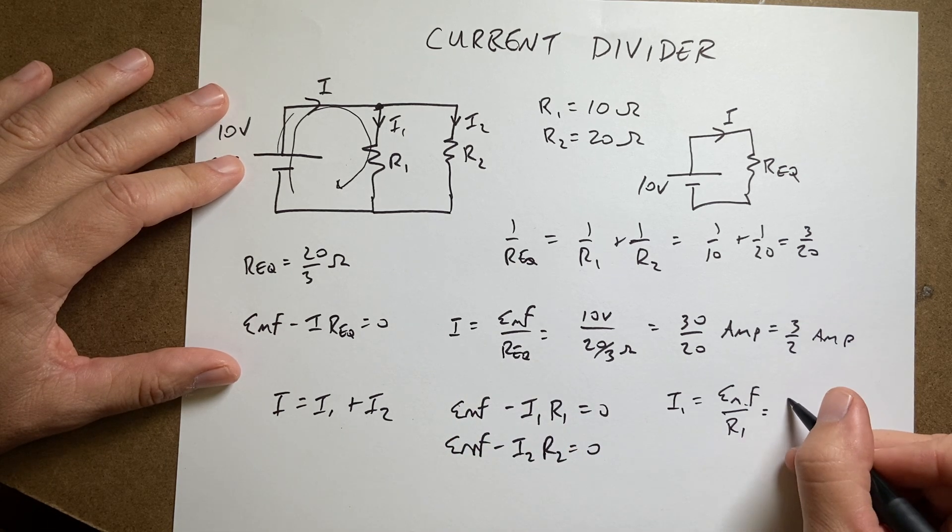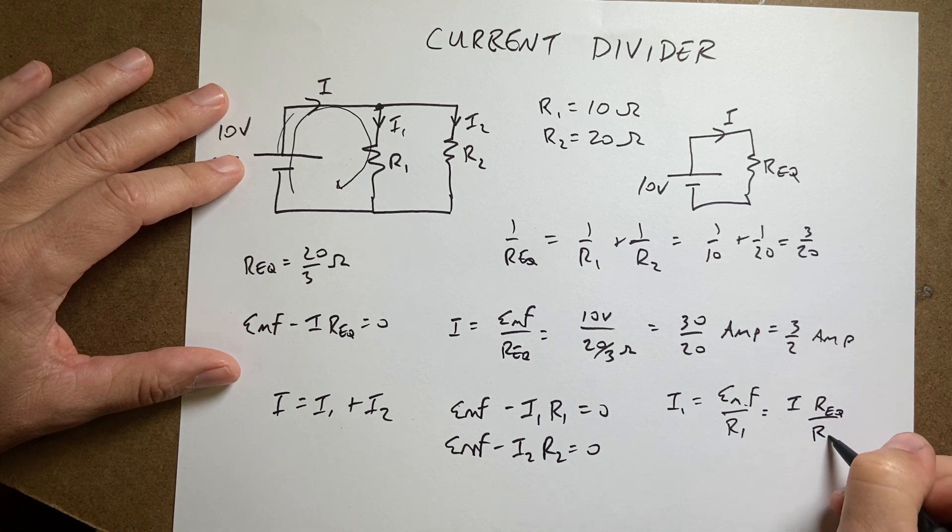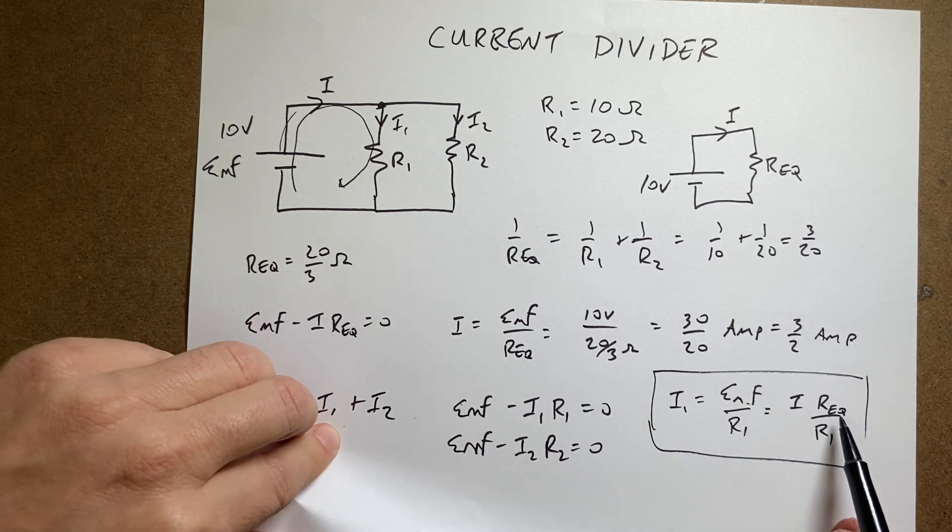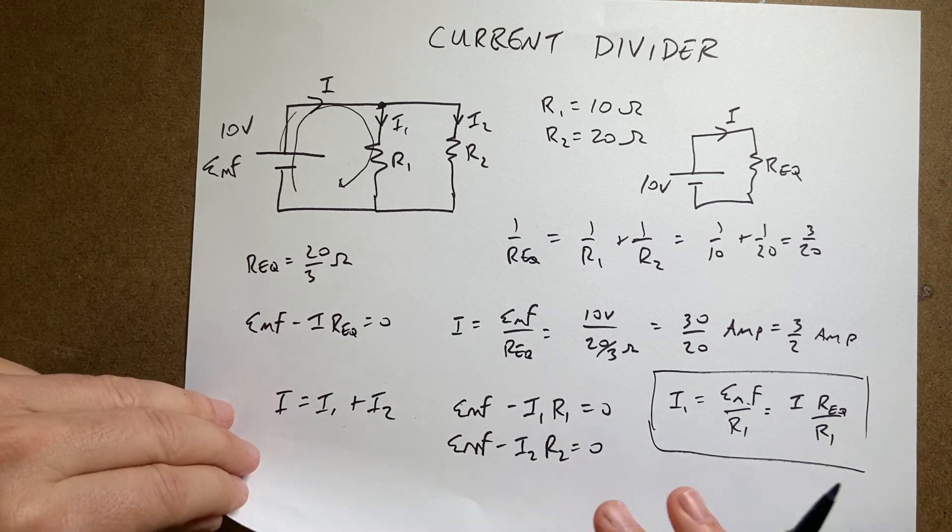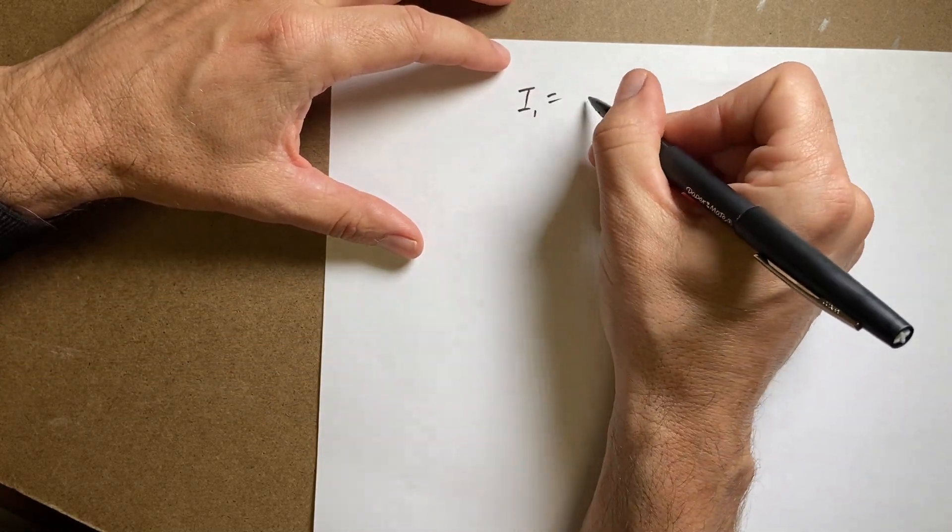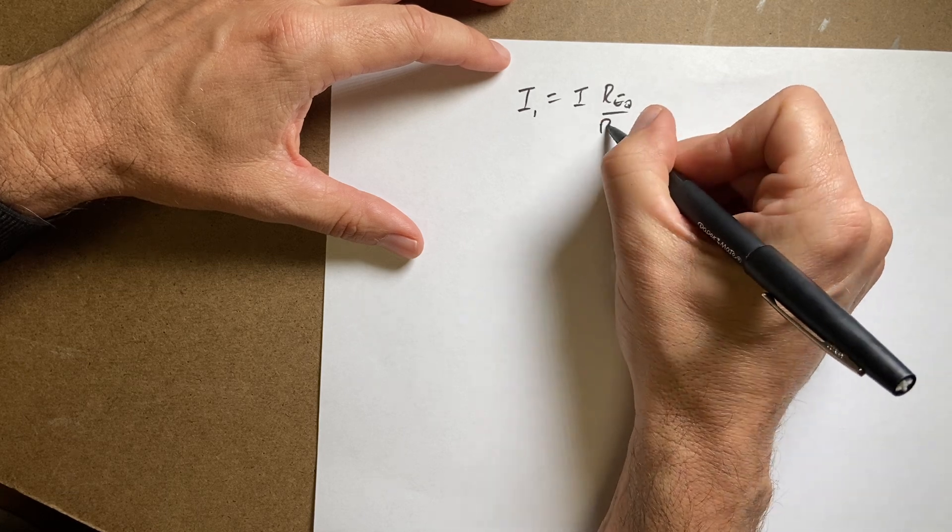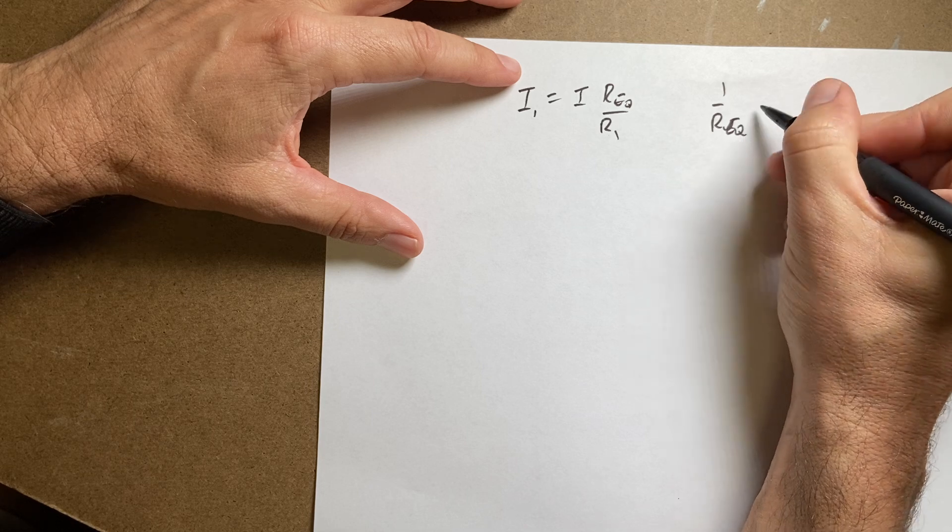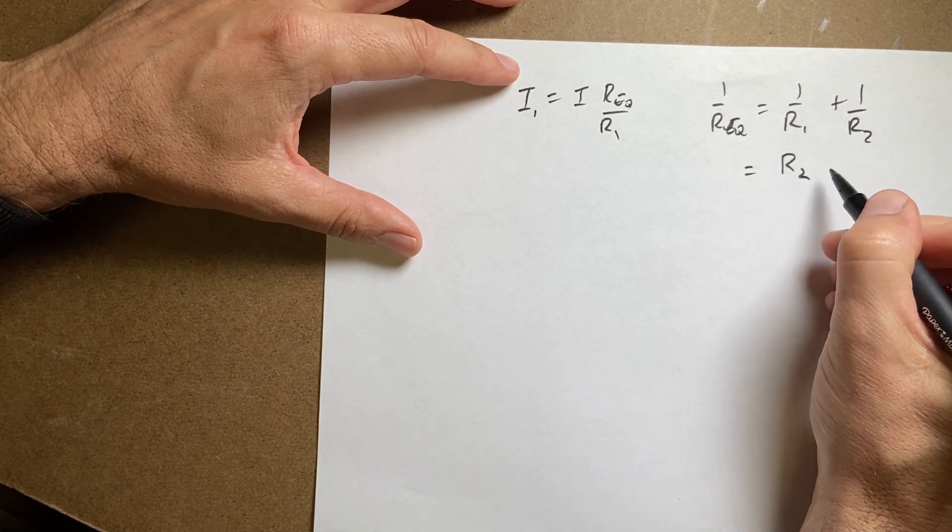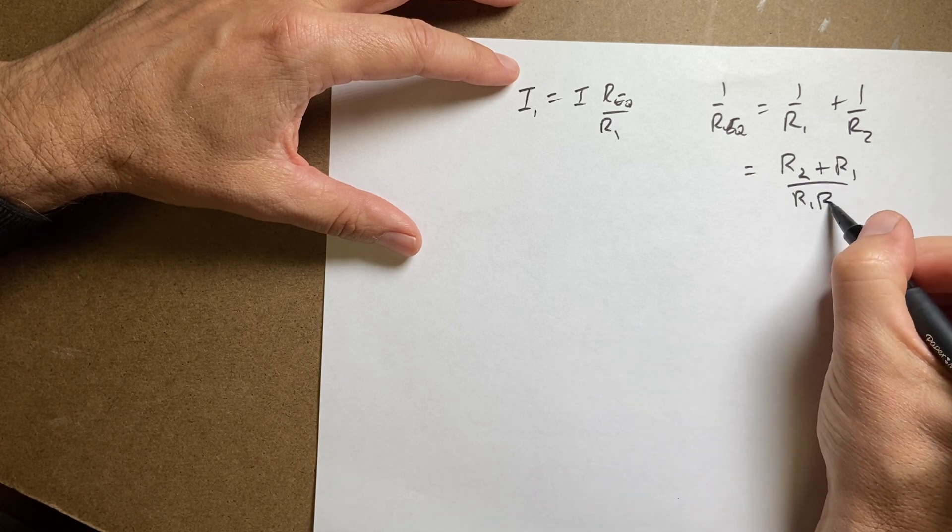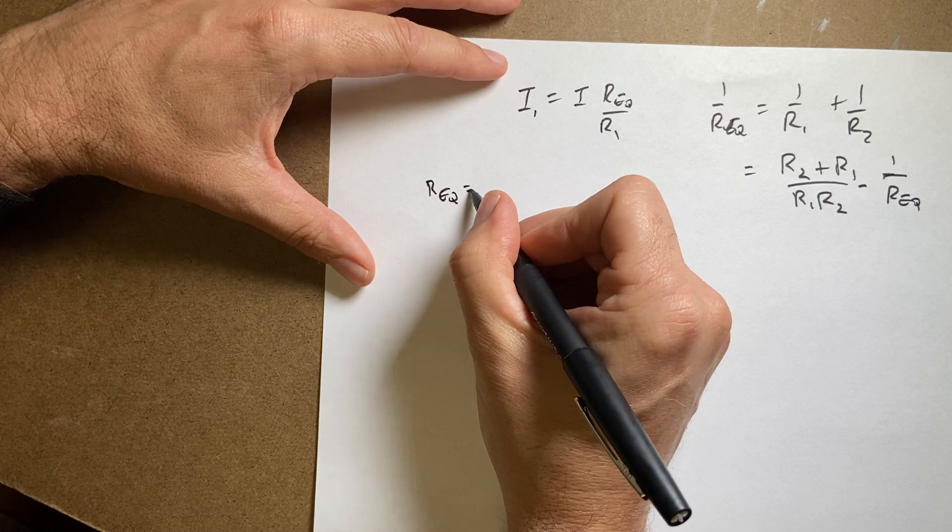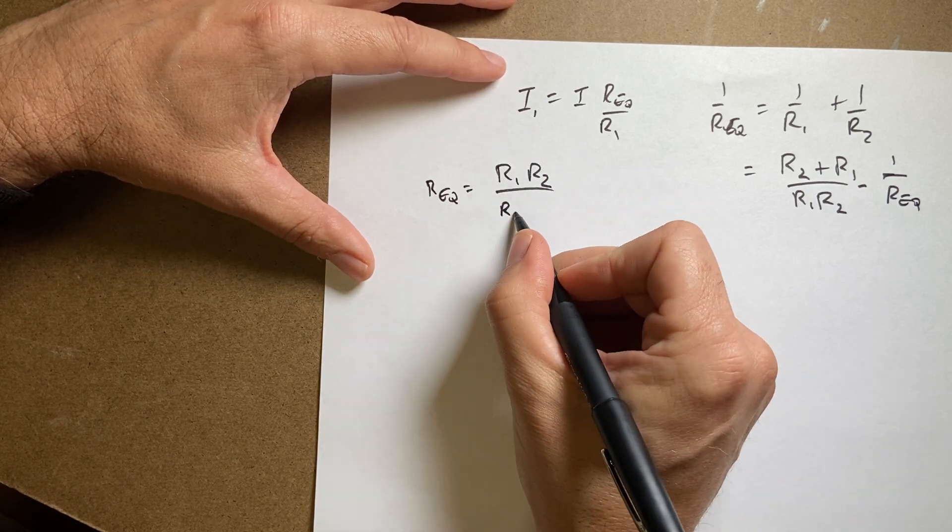So it's going to be I times R equivalent over R1. Now I need to, I'm going to put back in my definition of R equivalent. So let's do that. I'm doing this the long way because I don't think things through all the time. So let's see I have I1 equals I R equivalent over R1. And so 1 over R equivalent is 1 over R1 plus 1 over R2. So let's just do this as, get a common denominator and say R2 plus R1 over R1 times R2 is equal to 1 over R equivalent. So R equivalent is equal to R1 R2 over R1 plus R2.